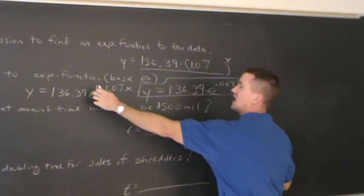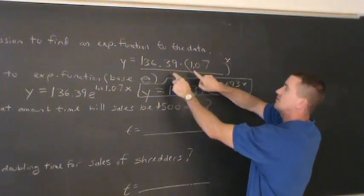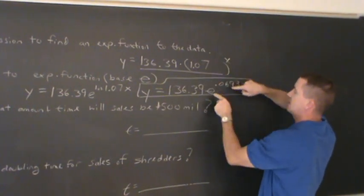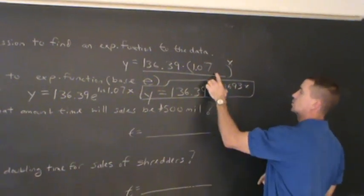All right, so I can write this as e to the .0693x. And here we have an exponential function, base e. This is equivalent to this. We just changed that base of 1.07 to e to the .0693. These are equivalent.